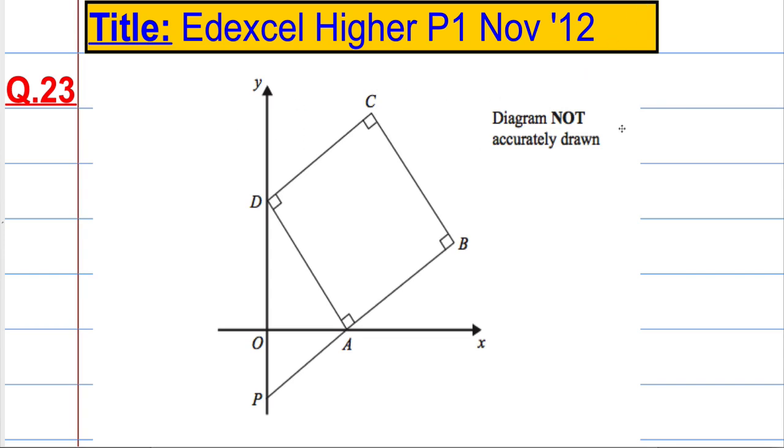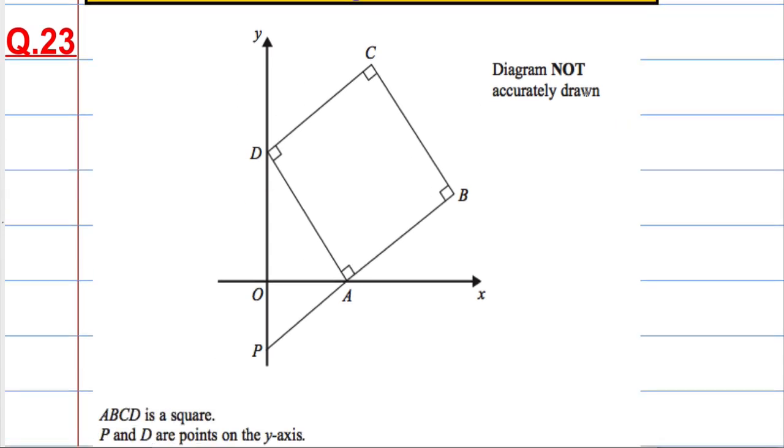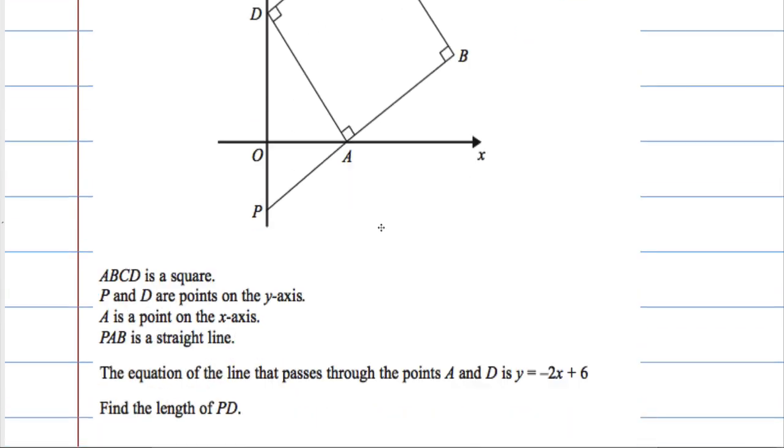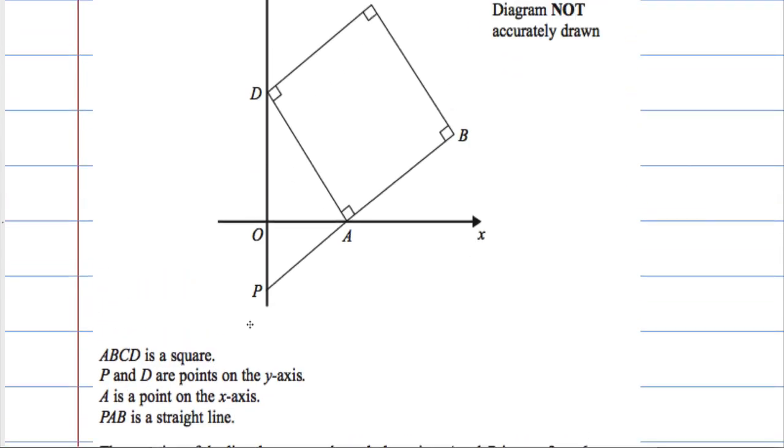Right, so question 23 is testing our coordinate geometry. We've got this diagram here. ABCD is a square. P and D are points on the y-axis, that means their x value is 0. And A is on the x-axis, which means the y-coordinate will be 0.